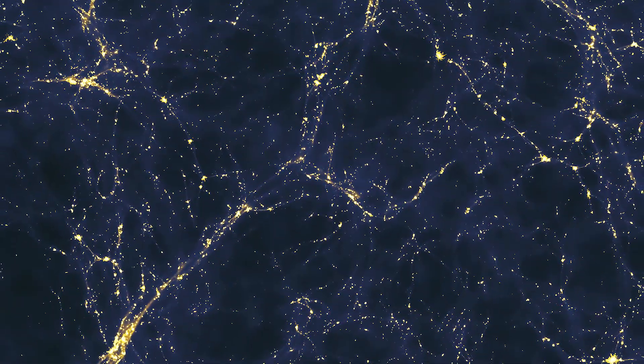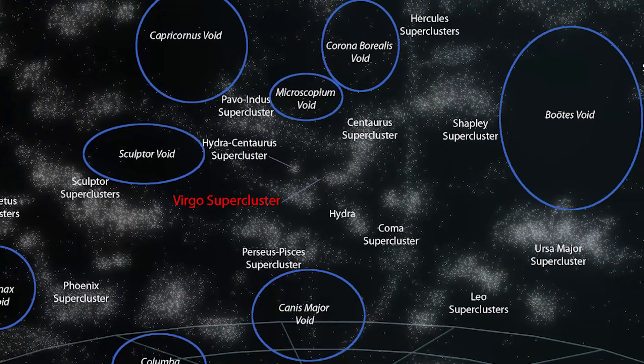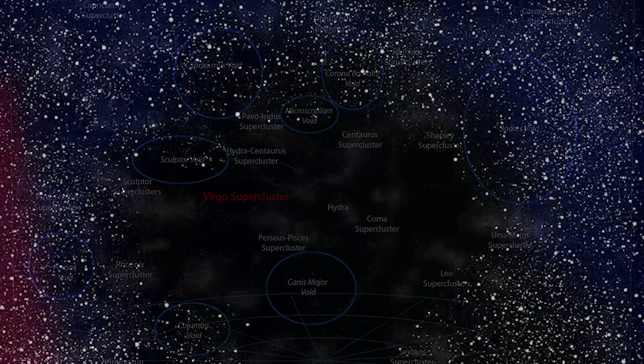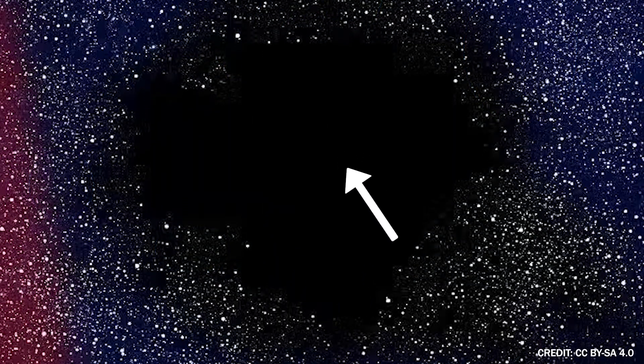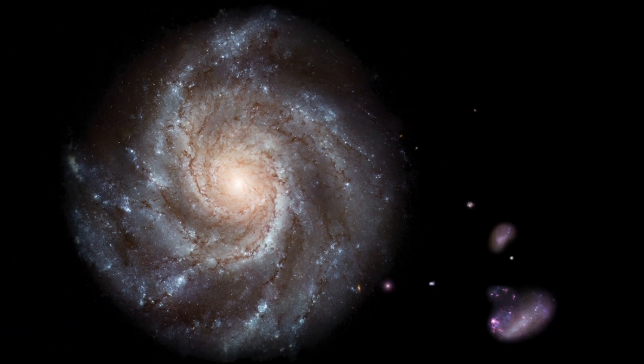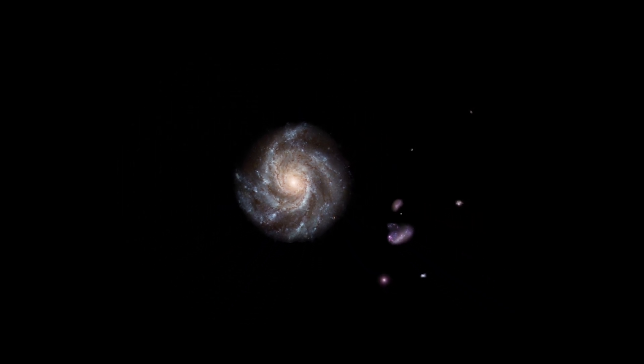The filaments connect clusters of galaxies like cosmic highways. But between them, there are giant voids, unimaginably huge zones of space that contain very little matter, hardly any galaxies, and even less dark matter. These voids can span from tens to hundreds of millions of light-years. They're not completely empty, but compared to the rest of the universe, they're ghost towns.